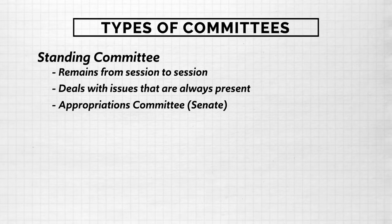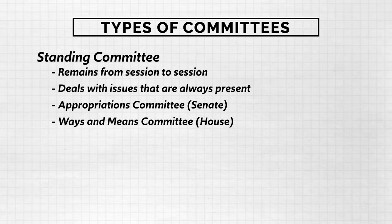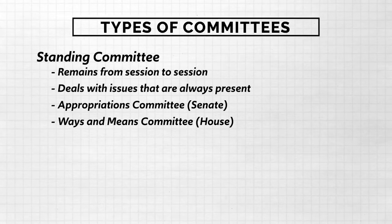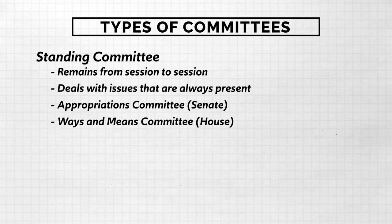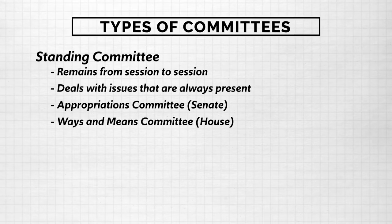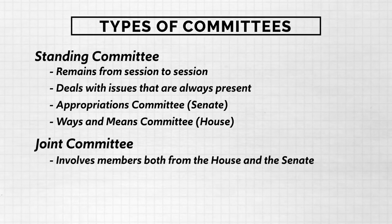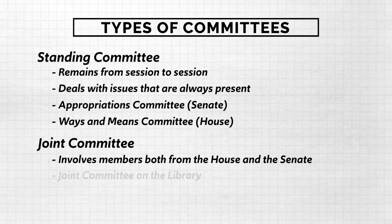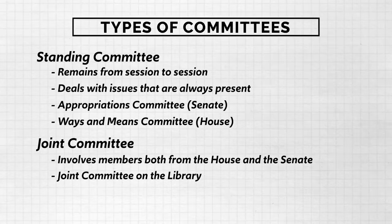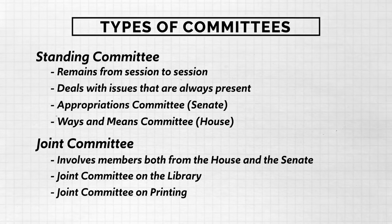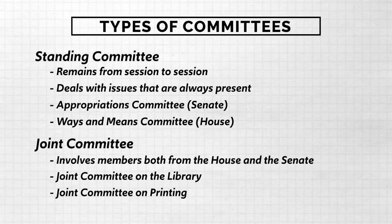A good example of a standing committee in the House is the Ways and Means Committee, among the most powerful and prestigious committees there, responsible for taxation bills of various kinds. The next kind of committee is the Joint Committee — groups that involve members from both the House and the Senate. Examples include the Joint Committee on the Library and the Joint Committee on Printing. Both can persist over time, but sometimes joint committees can be formed in the short term as well.